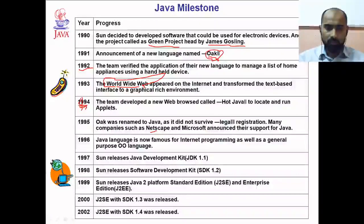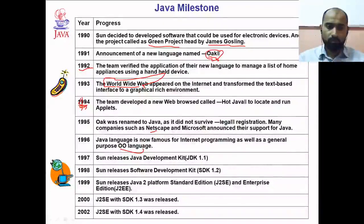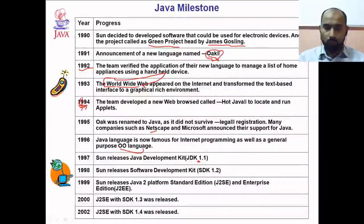In 1996, Java became famous for internet programming as well as general-purpose object-oriented programming. In 1997, Sun released Java Development Kit version 1.1. JDK 1.0 had been announced in 1995, and JDK 1.1 followed in 1997.